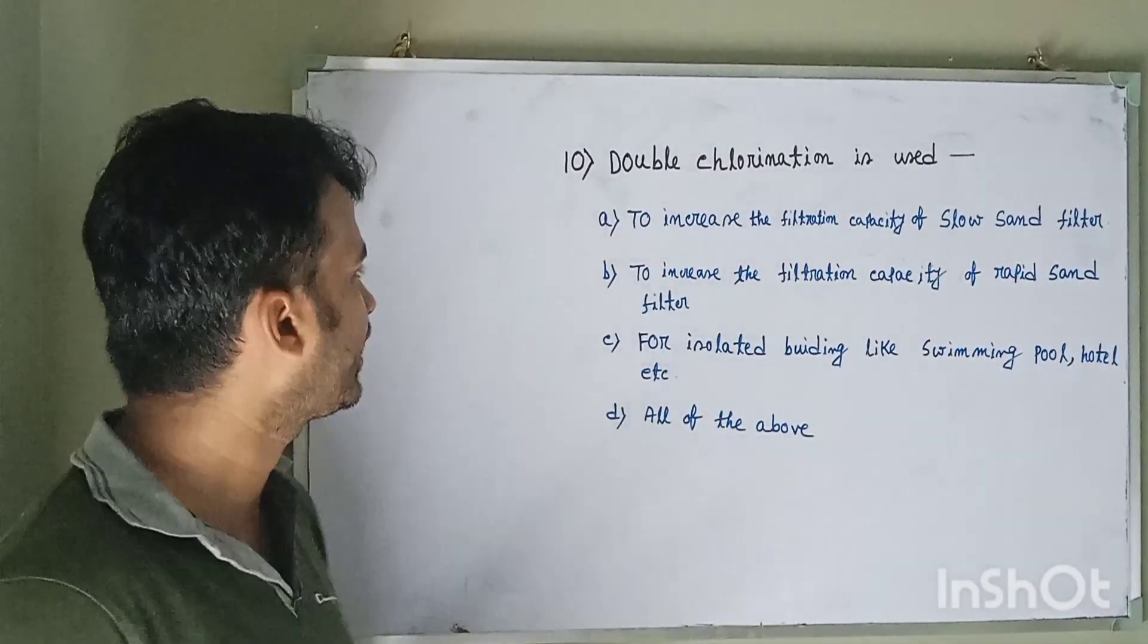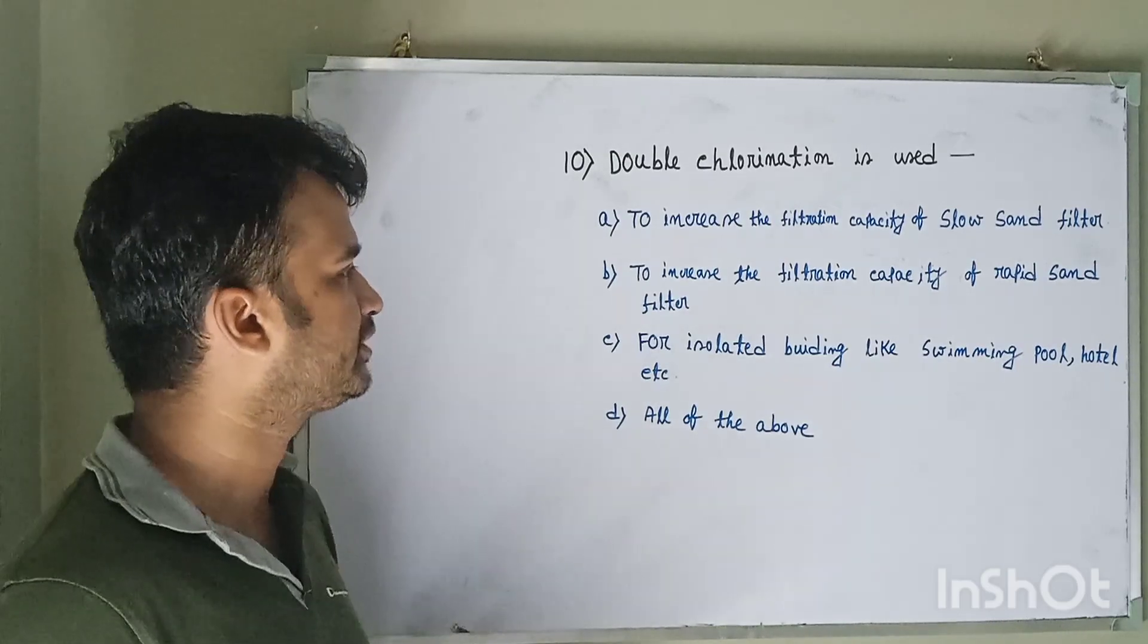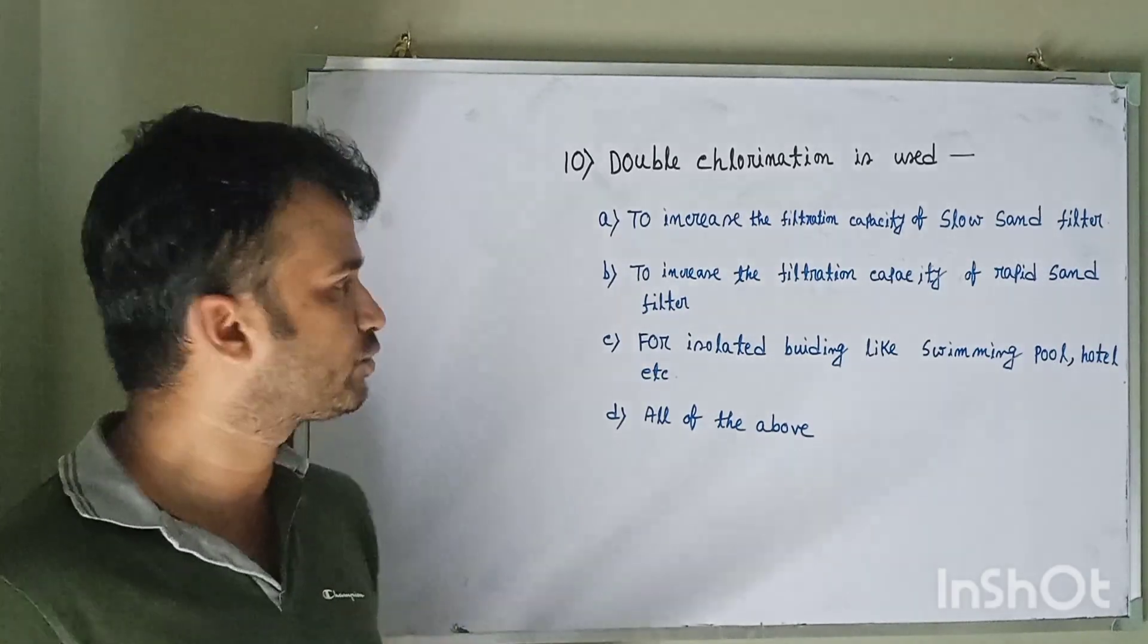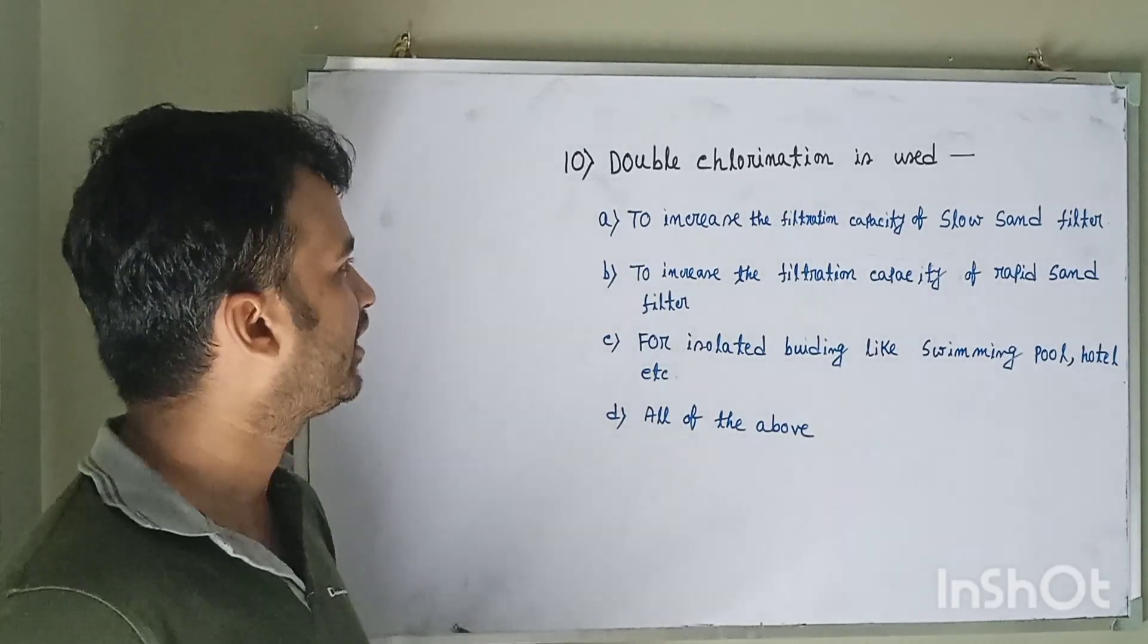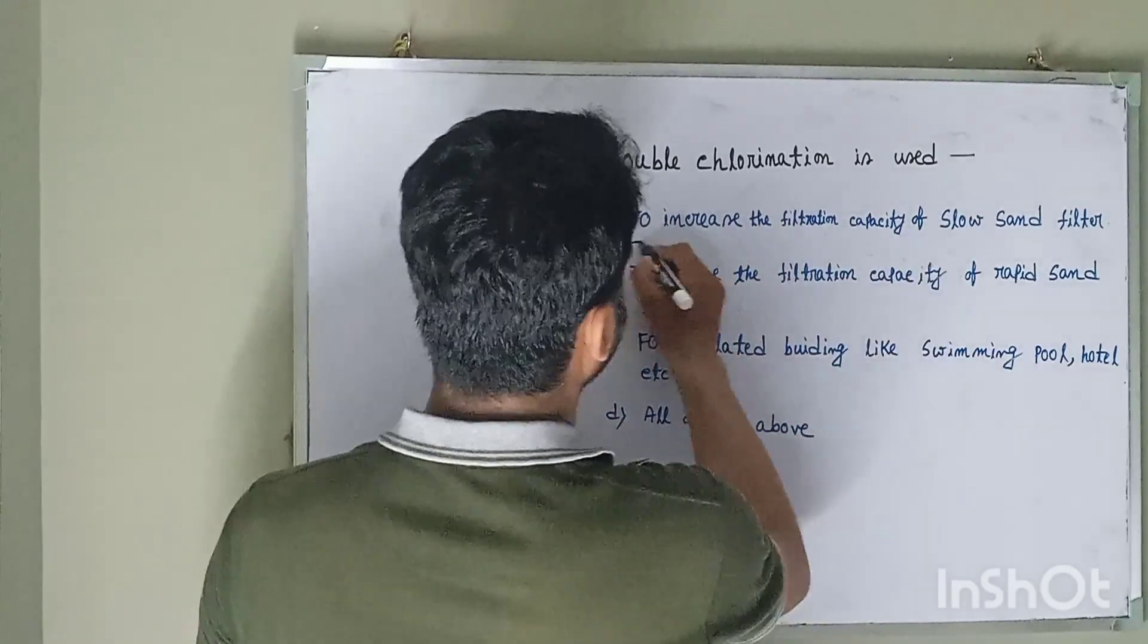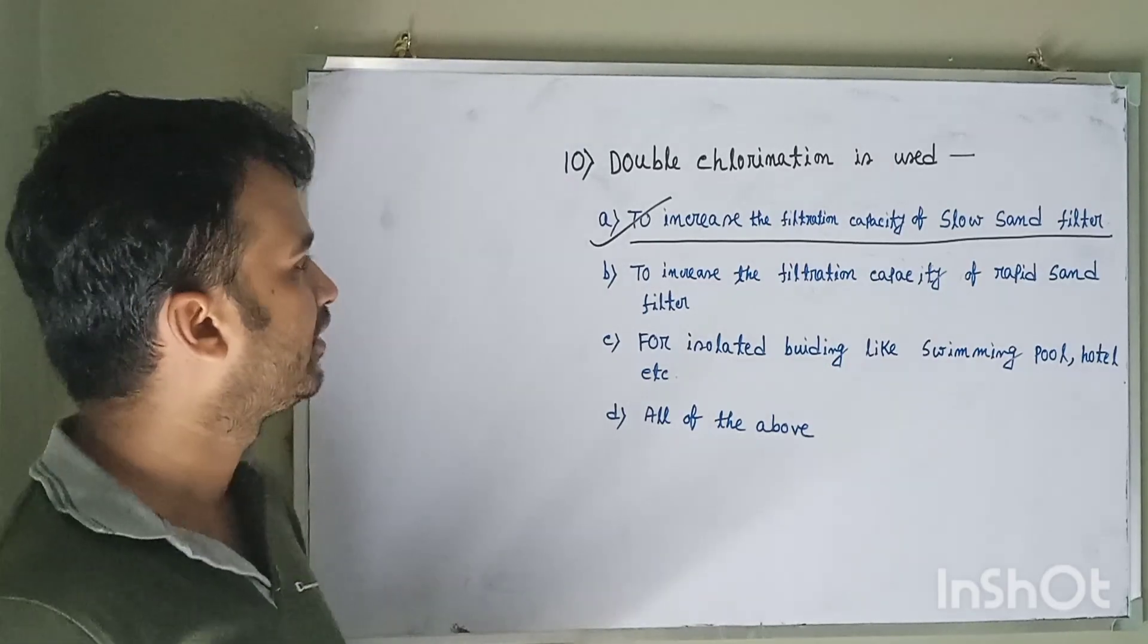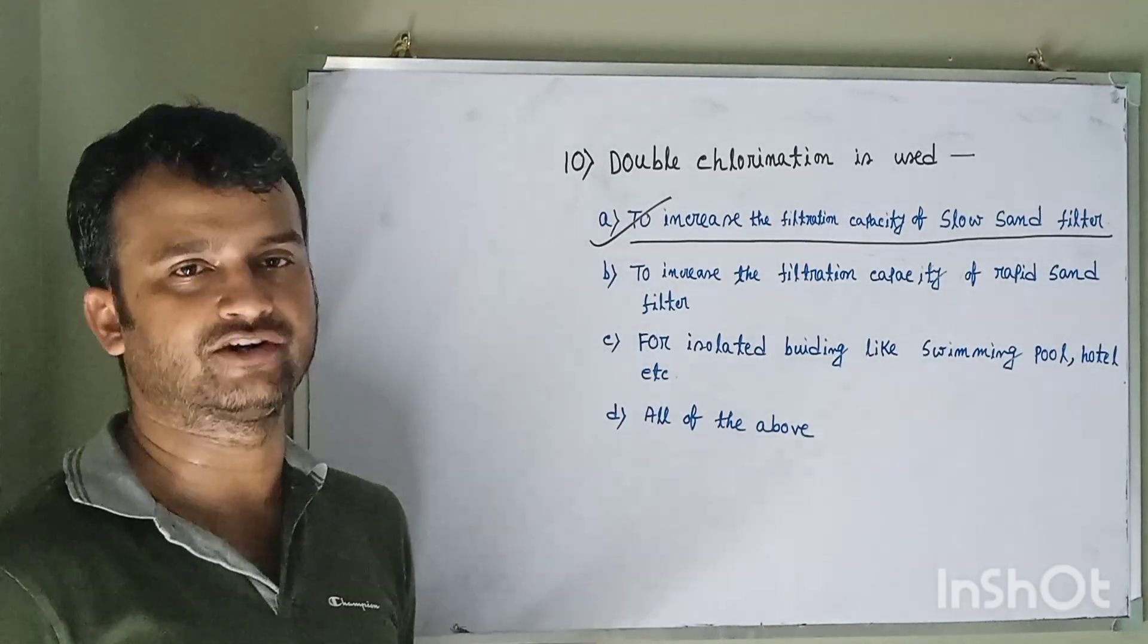Question number ten: Double chlorination is used option A to increase the filtration capacity of slow sand filter, option B to increase the filtration capacity of rapid sand filter, option C for isolated building like swimming pool, hotel, etc., and option D all of these. This question is very interesting and very important because this is also asked in almost every government examination. The answer is to increase the filtration capacity of slow sand filter, because in slow sand filter the filtration rate is very low. And if you wish to increase the filtration capacity to some extent, then we can add some preliminary filter which is also known as roughing filter.